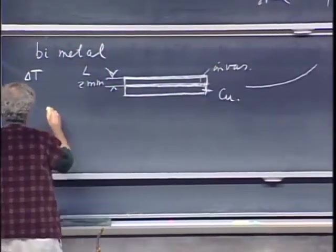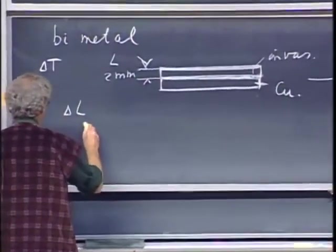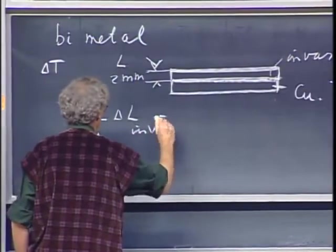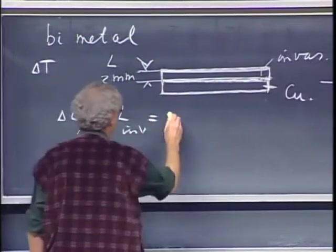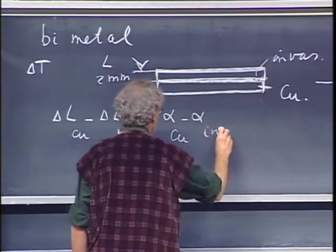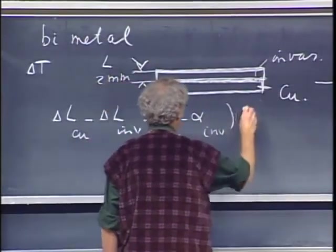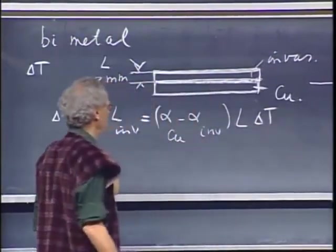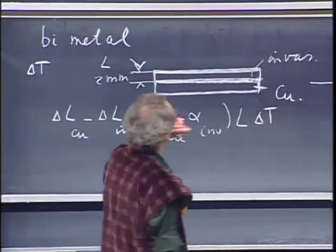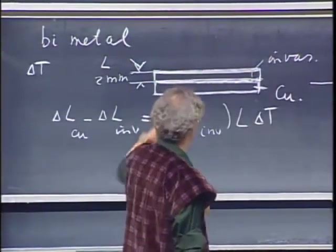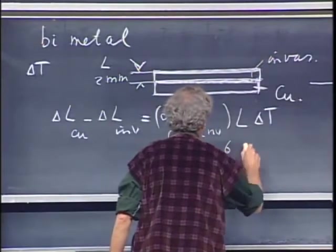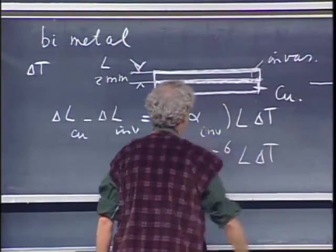And we'll see there are many applications of that. So what I'm interested in is really the delta L of the copper minus the delta L of the invar. That's what I'm after. And that is the alpha of copper minus alpha of invar times L times delta T. So it is the difference that matters.